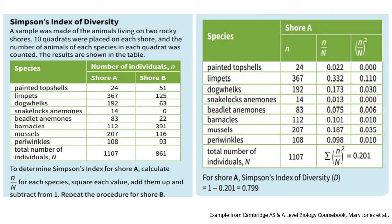Let's look at this example from the textbook. So here it says a sample was made of the animals living on two rocky shores. Ten quadrants were placed on each shore and the number of animals of each species in each quadrant was counted and the results are shown as below. So this is shore A and this is shore B. In this case the number of individuals, for example 24 here would be n. For shore B it would be small n as well and big N would be the total number of organisms. So when you add all of these values together you get big N. So once you have all of that on lockdown you can then calculate for each shore.